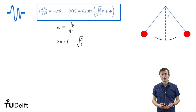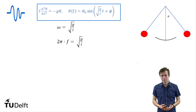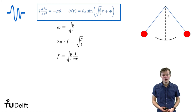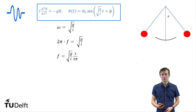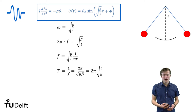We also know that this angular frequency is two pi times f. So two pi times f is equal to the square root of g over l. So f is equal to the square root of g over l divided by two pi. We just said that T is equal to one over f, so T is equal to two pi divided by the square root of g over l, which equals two pi times the square root of l over g.